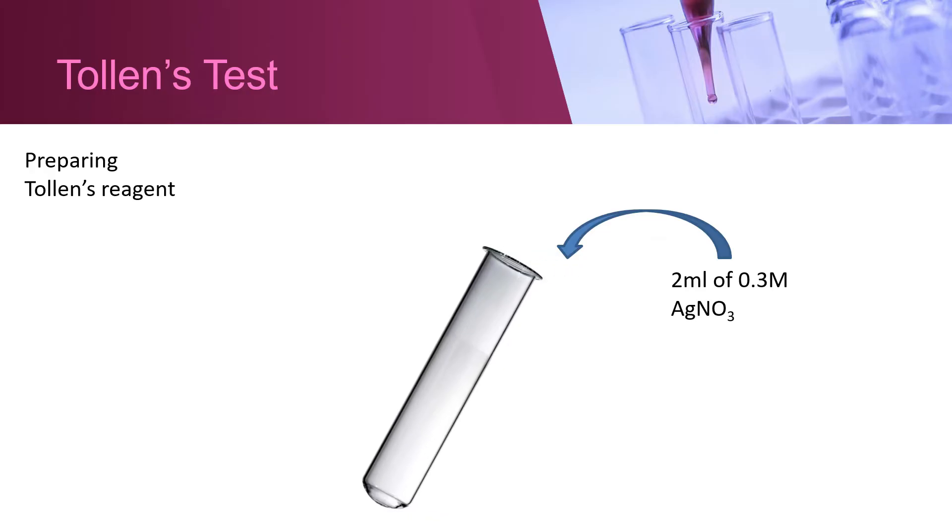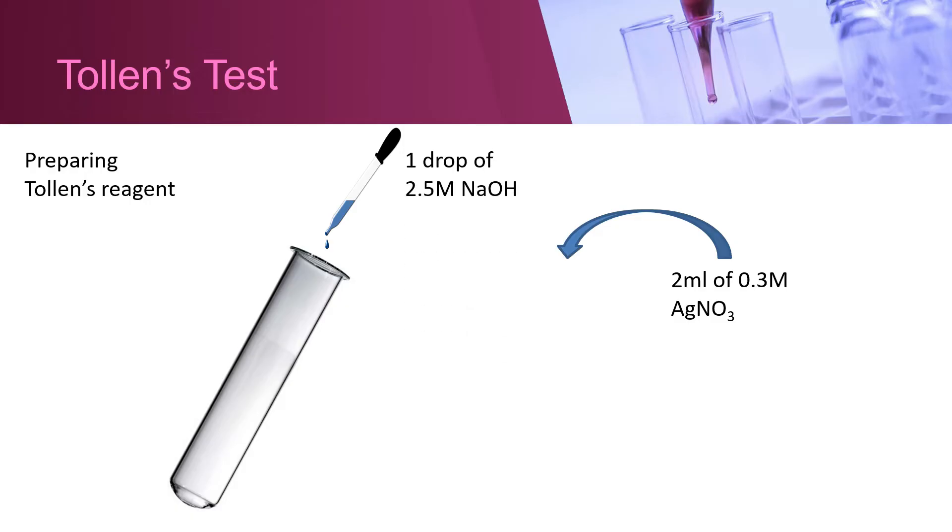Tollen's test - Preparing Tollen's reagent: Add 2 milliliters of 0.3 molar argentum nitrate in a boiling tube. Add 1 drop of 2.5 molar sodium hydroxide.